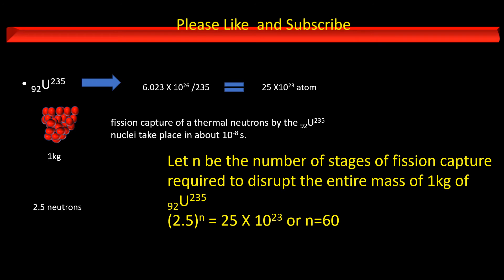Let n be the number of stages of fission capture required to disrupt the entire mass of 1 kg of uranium 235. That is (2.5)^n = 25 × 10^23, or n = 60.